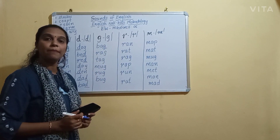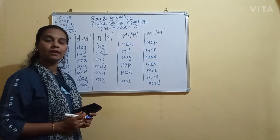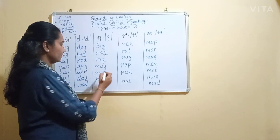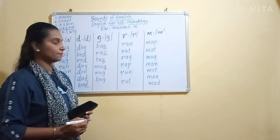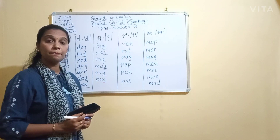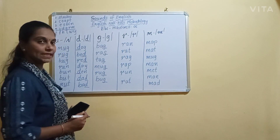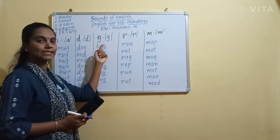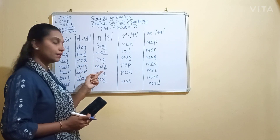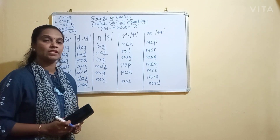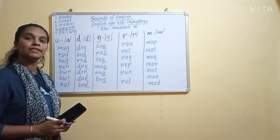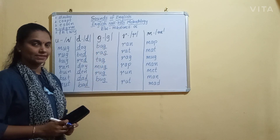Examples for G says G: bag, rag, tag, mug, rug, and bug.